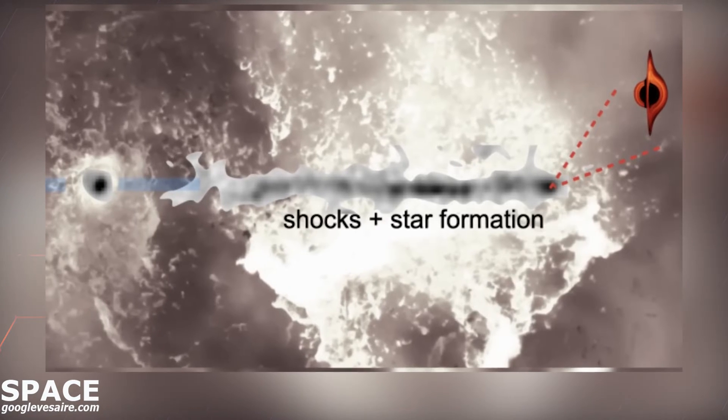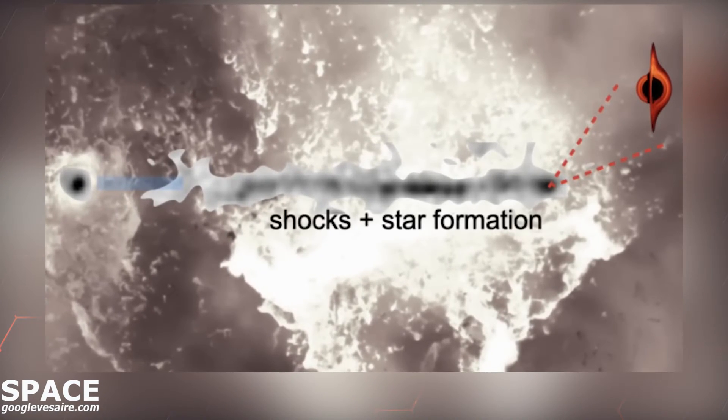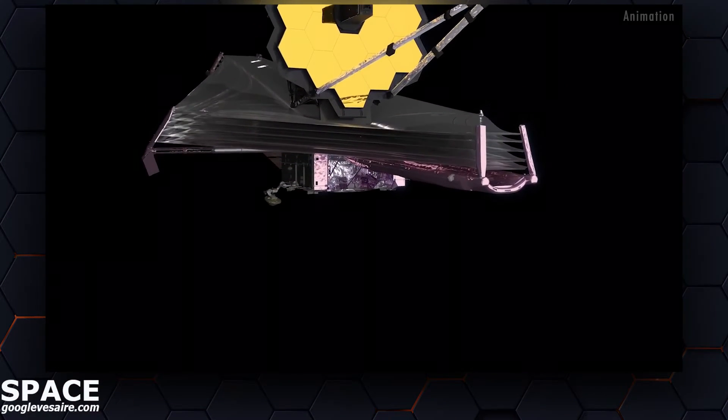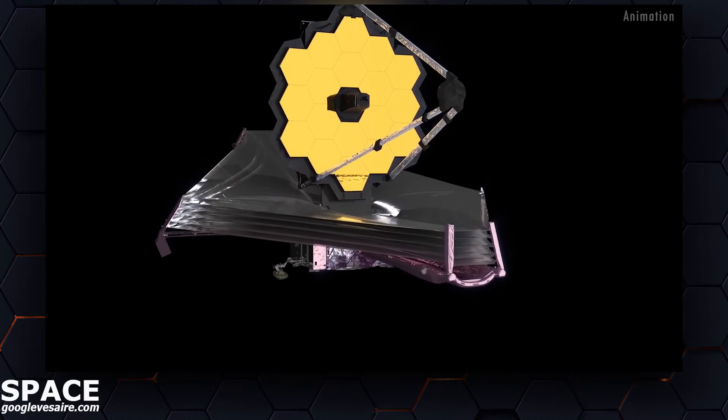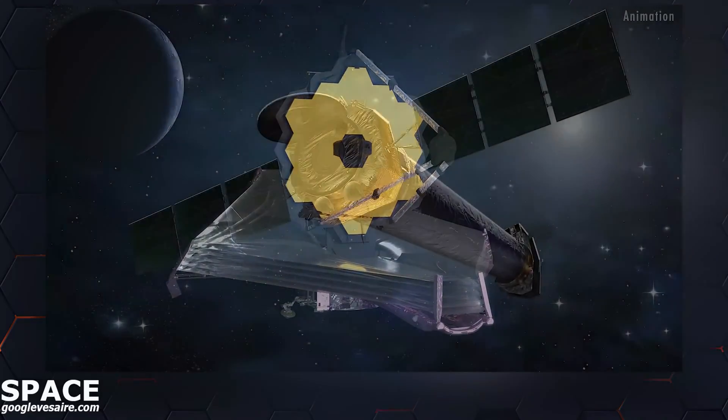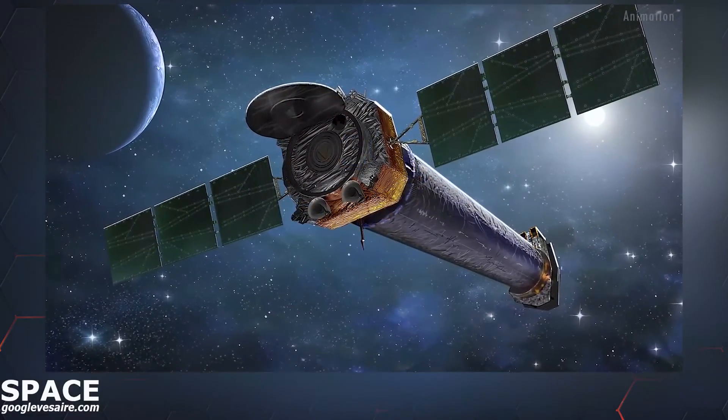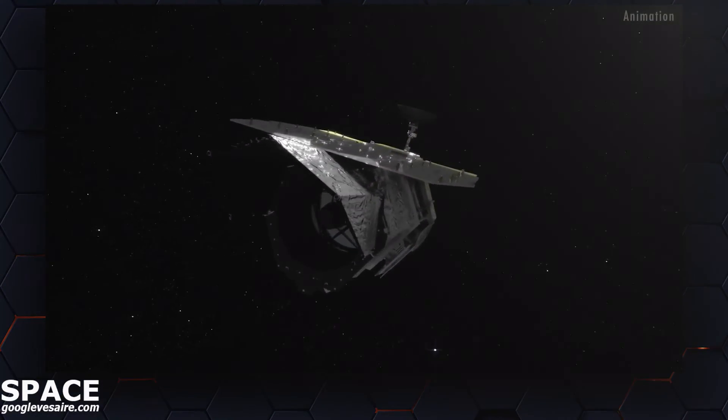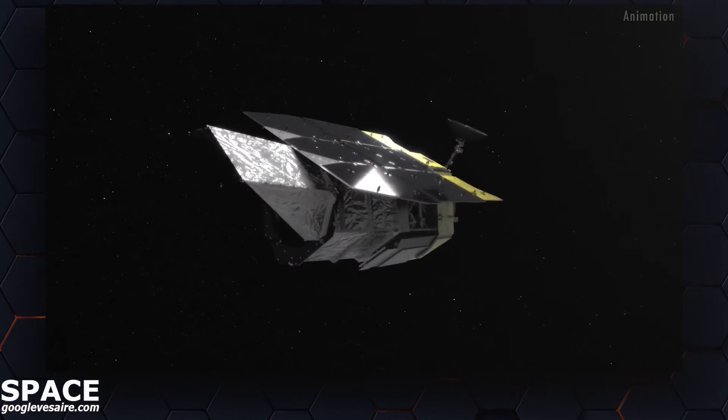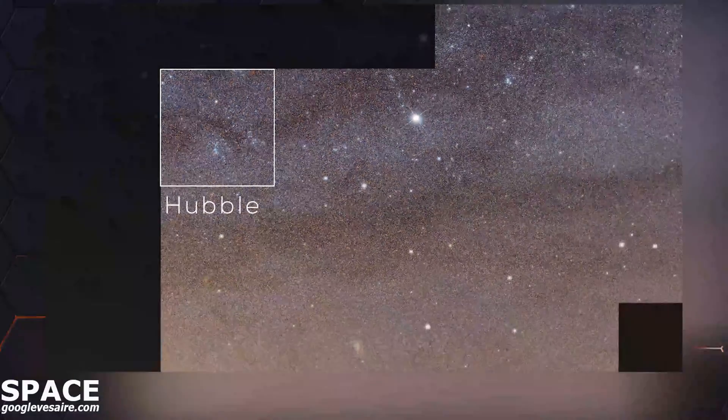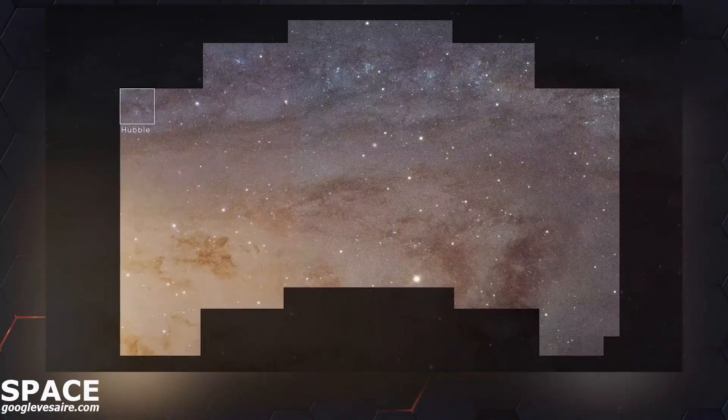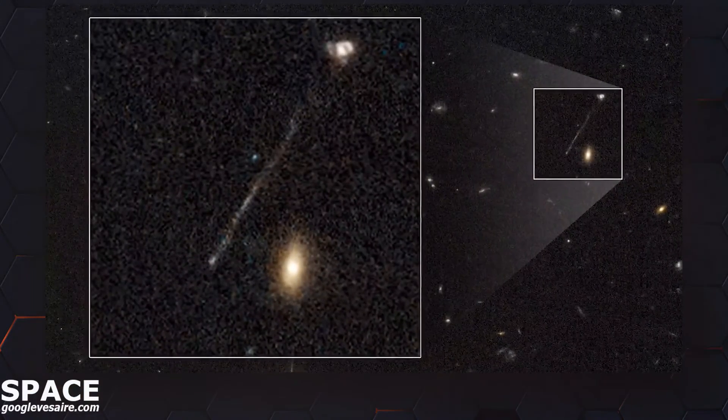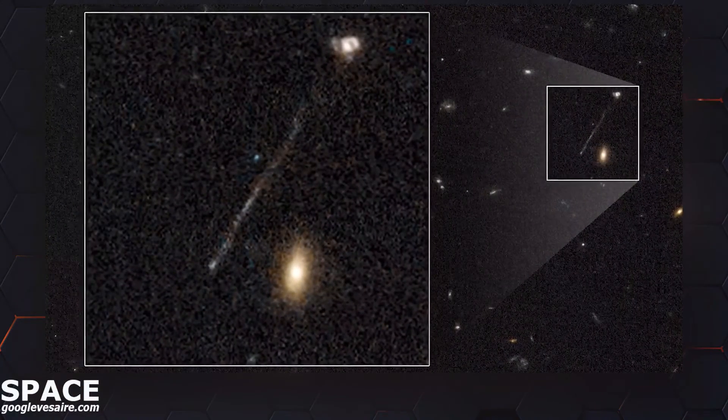The next step is to do follow-up observations with NASA's James Webb Space Telescope and the Chandra X-ray Observatory. Also, NASA's upcoming Nancy Grace Roman Space Telescope will have a wide-angle view of the universe with Hubble's high resolution. As a survey telescope, the Roman observations might find more of these rare and improbable events elsewhere in the universe.